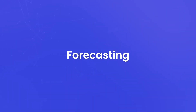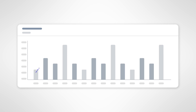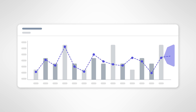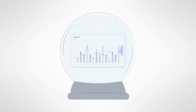Forecasting. Time is a crucial dimension. With SAP Analytics Cloud, you can perform time-series forecasting based on historical data. This allows you to make informed decisions about future trends and outcomes. Picture having a crystal ball, but in the form of data and analytics.